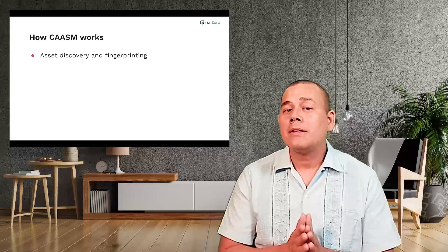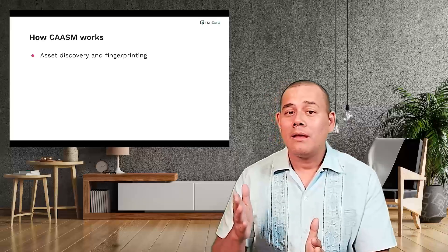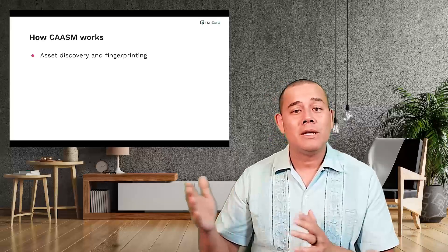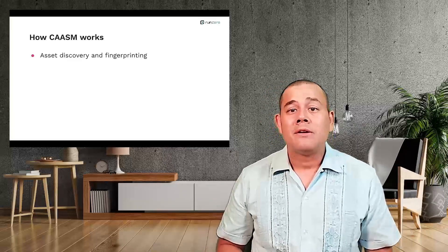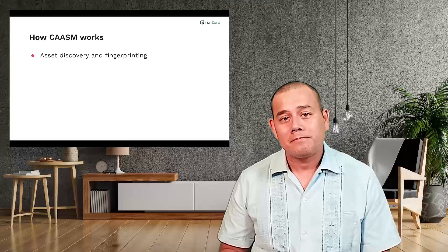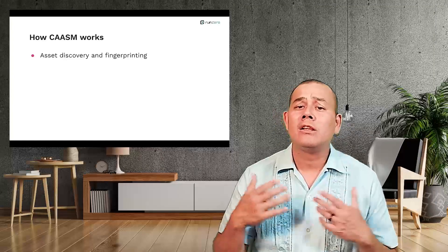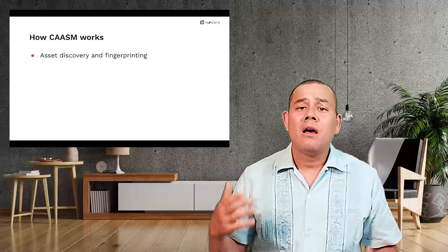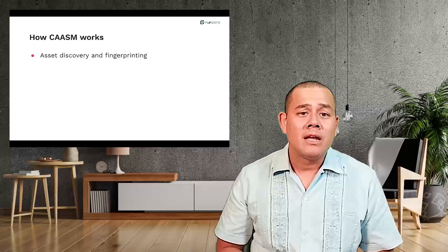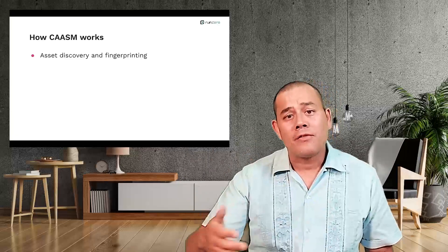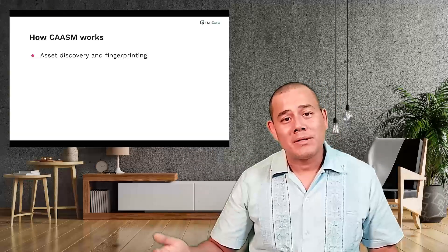So how does CHASM work? Well, it involves a few key steps. First, there's asset discovery and fingerprinting. This helps organizations get a clear understanding of their digital assets, including software and hardware and vulnerabilities and so on.